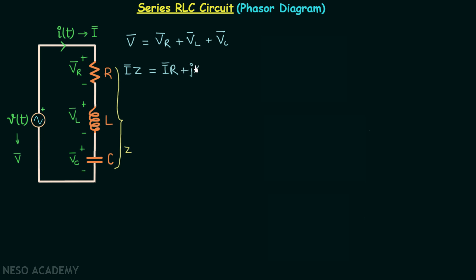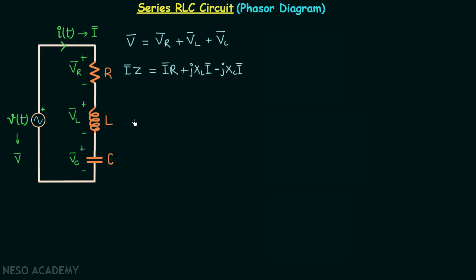VC phasor equals I phasor multiplied by negative jXC. So in place of VC phasor we can have negative jXC multiplied by I phasor.